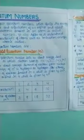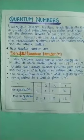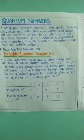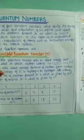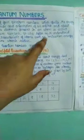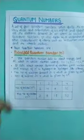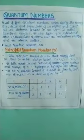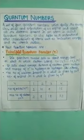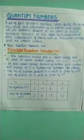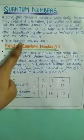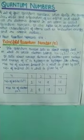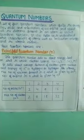An orbital is a region around the nucleus where the electrons are present. Quantum numbers are characteristics of an atom, such as ionization energy and the atomic radius. Ionization energy is the energy required to remove a loosely bound electron from the atom, and the atomic radius is the distance from the nucleus to the outermost shell.